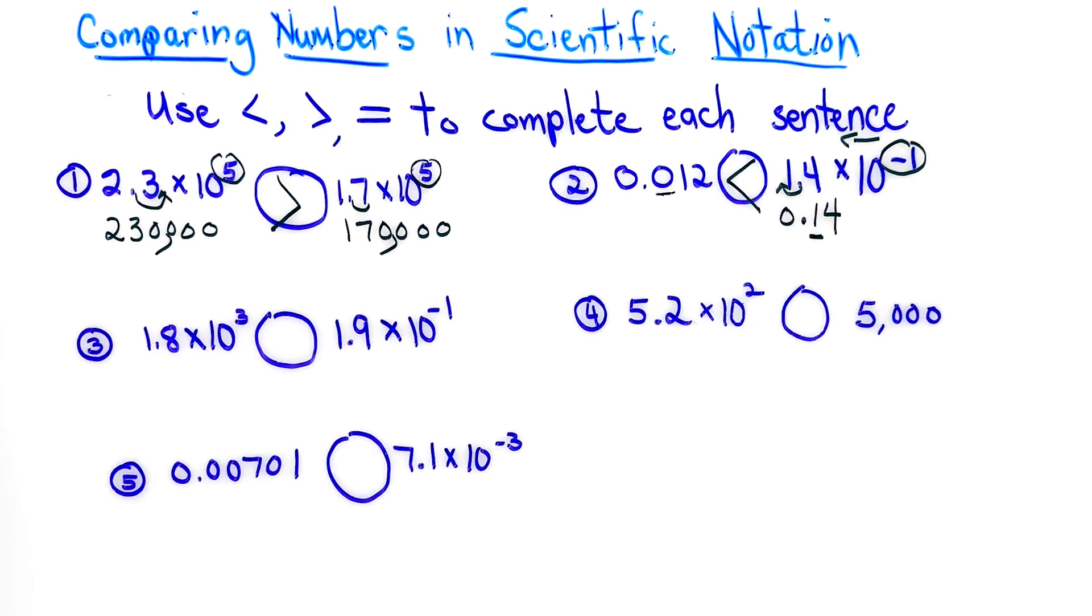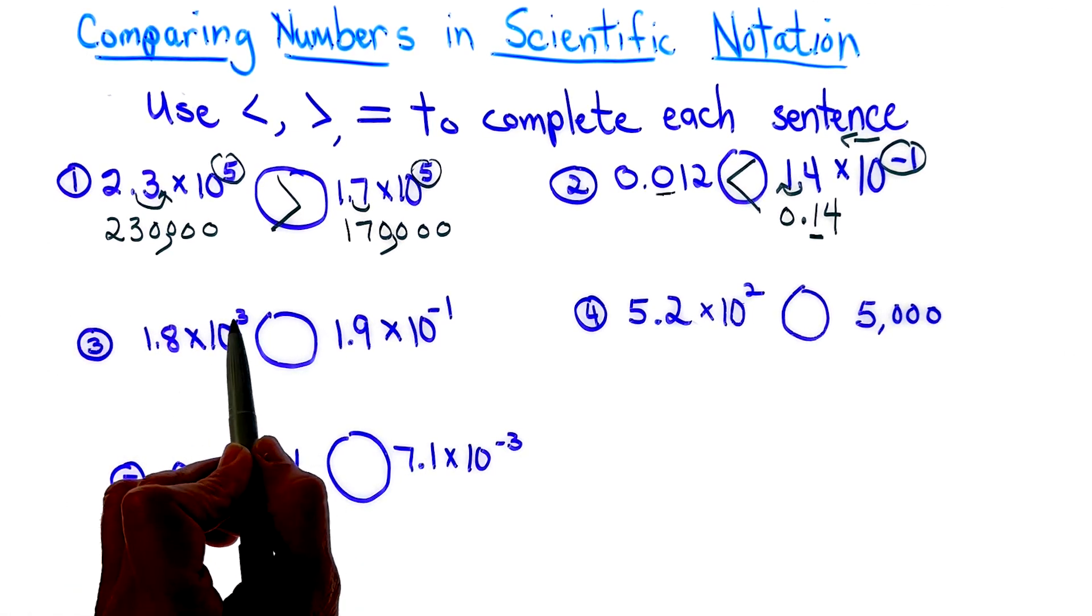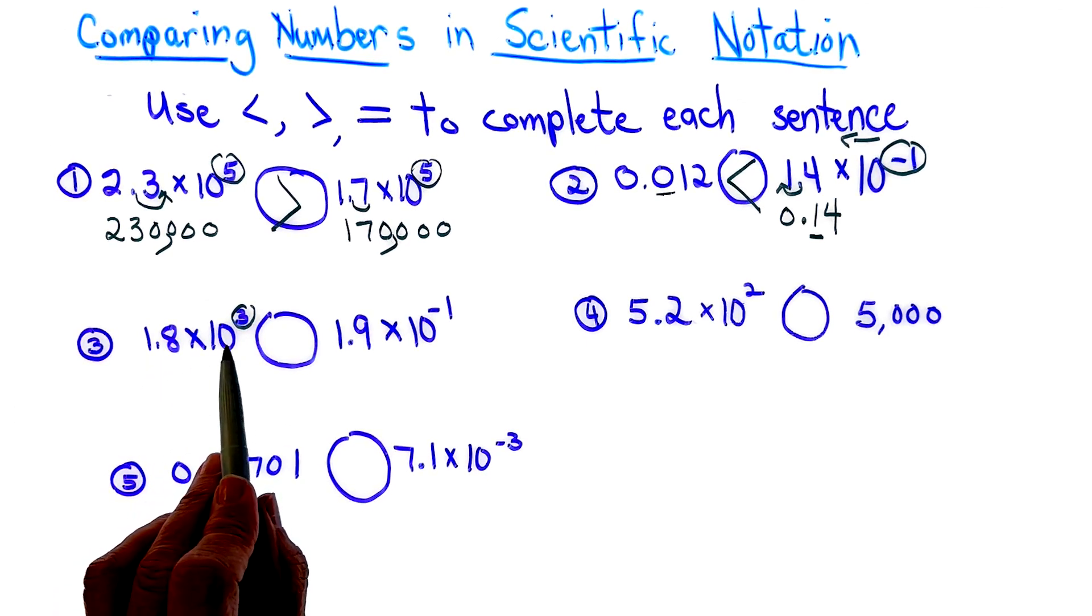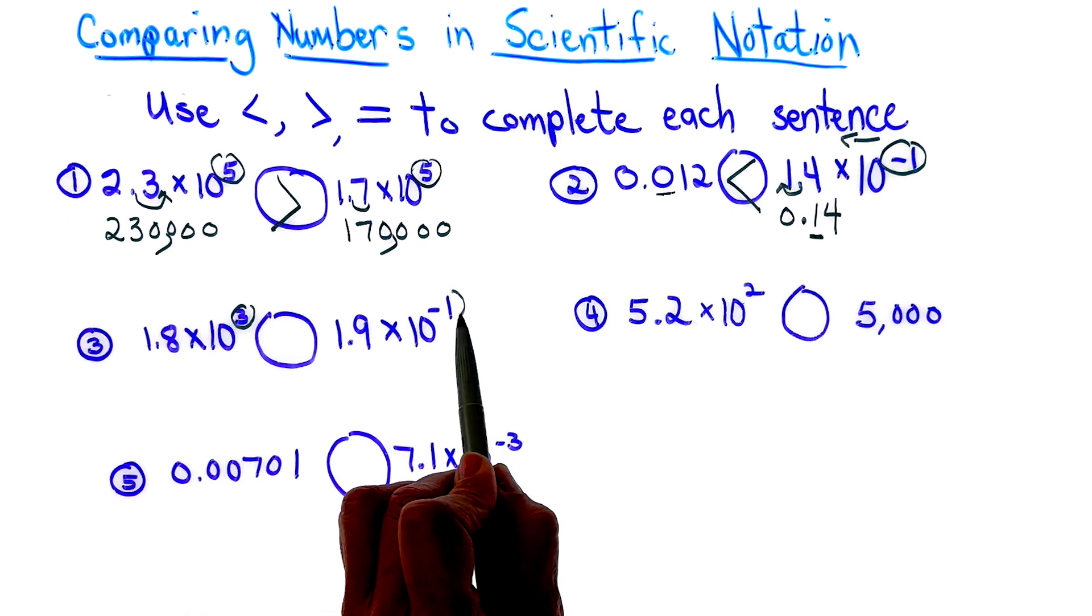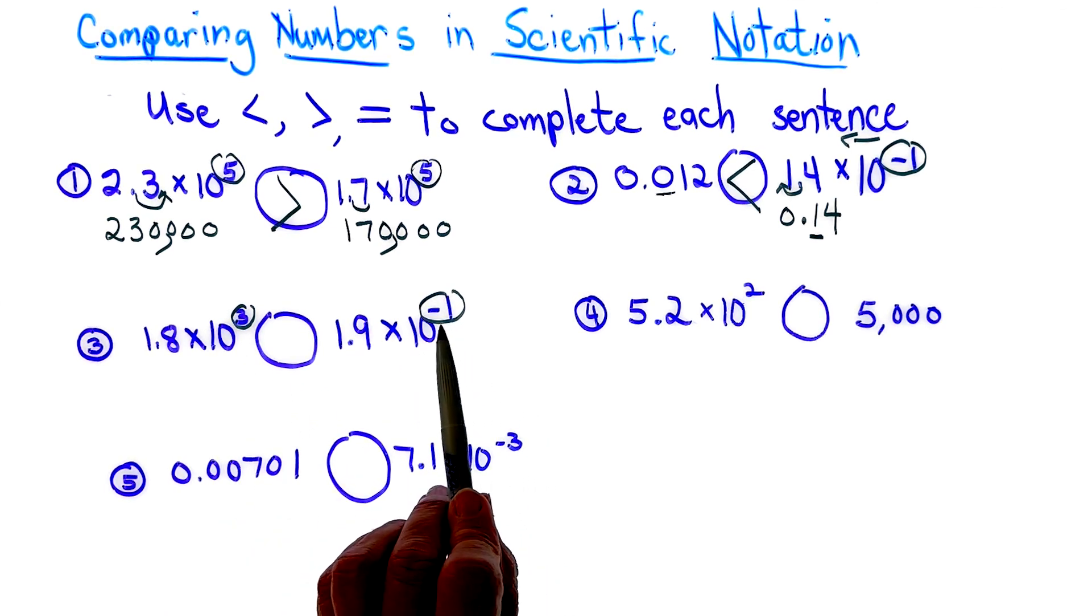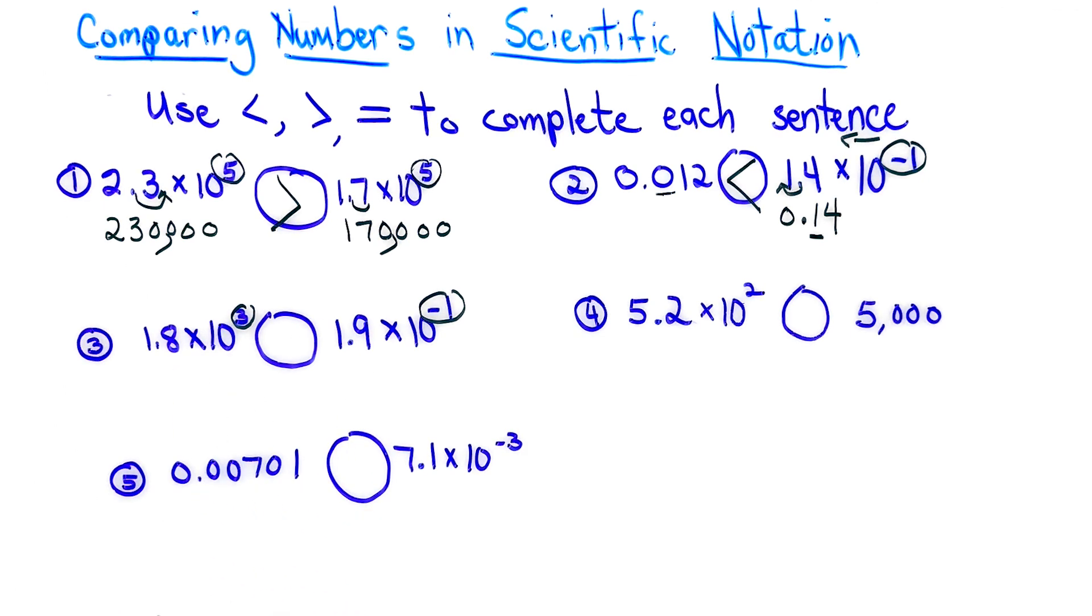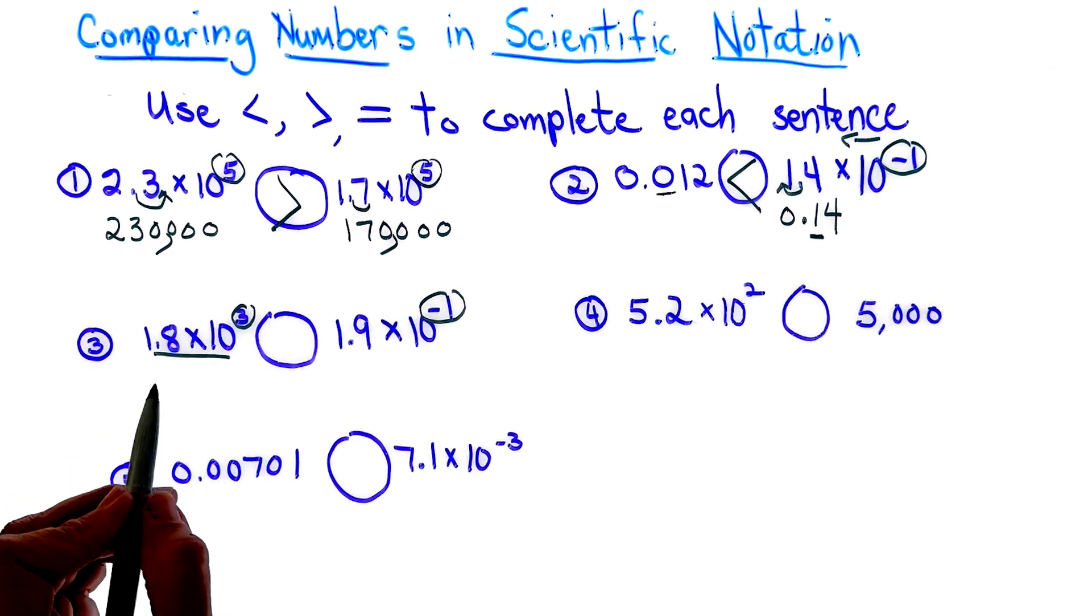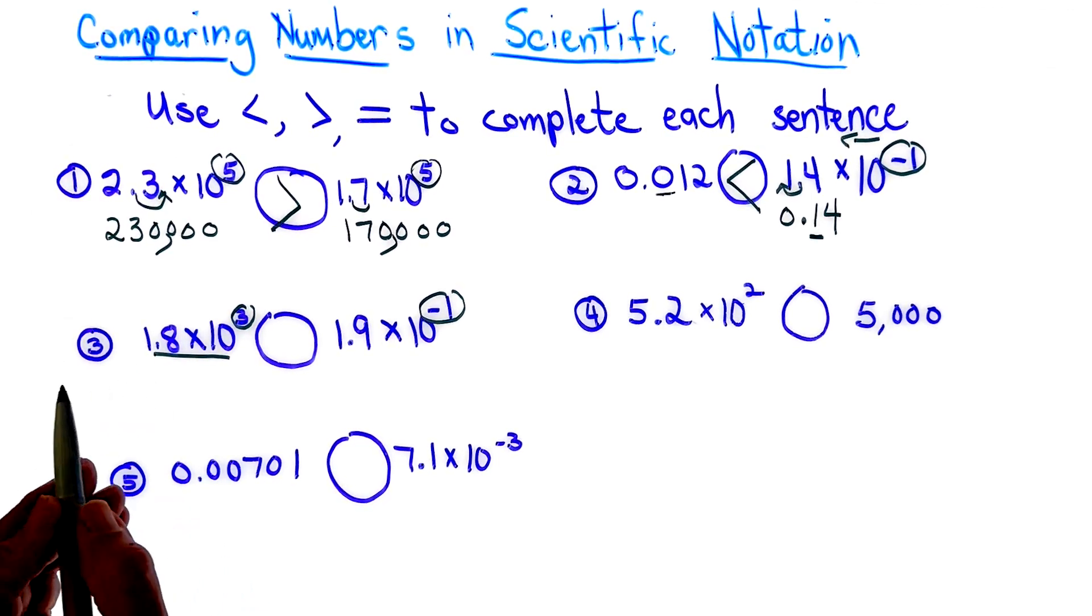For number three, I see I have a positive exponent with 1.8 times 10 to the third power, and I have a negative exponent. Well, the powers are going to be going opposite. The decimal point, I mean, is going to be going opposite directions. So let's change this to a number in standard notation, which means just the number.